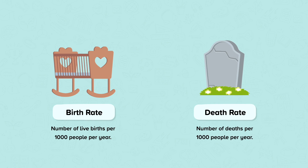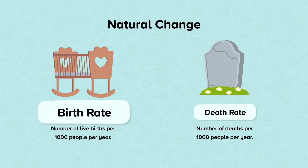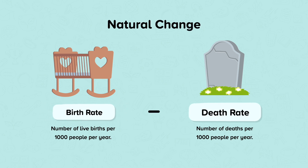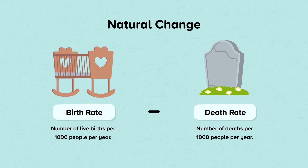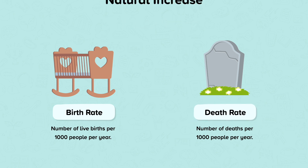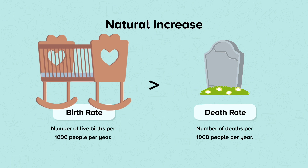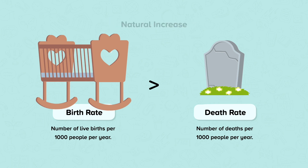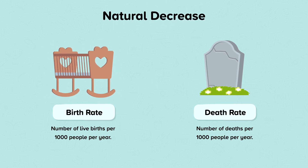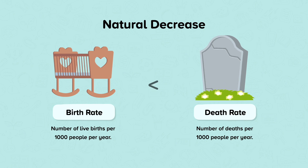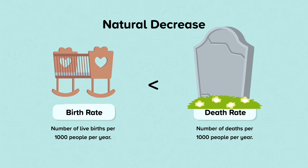We can calculate population or natural change by using the formula birth rate minus the death rate. Natural increase occurs when the birth rate is higher than the death rate. Natural decrease occurs when the death rate is higher than the birth rate.